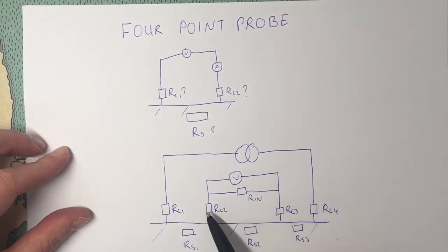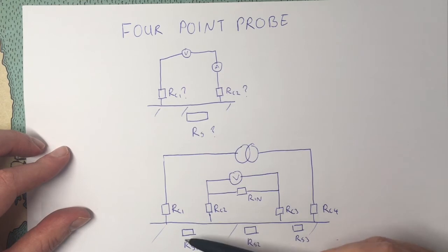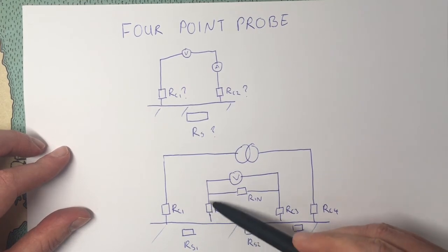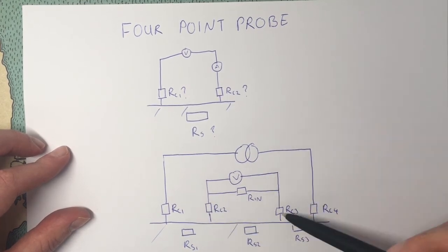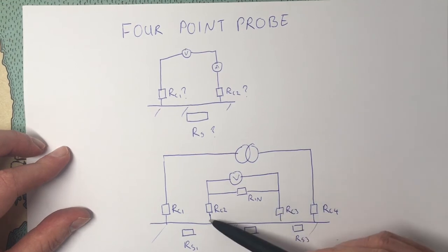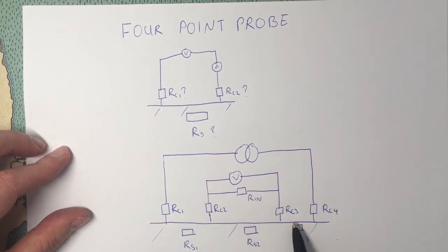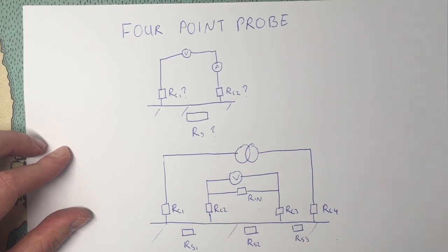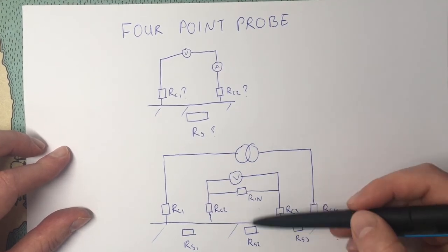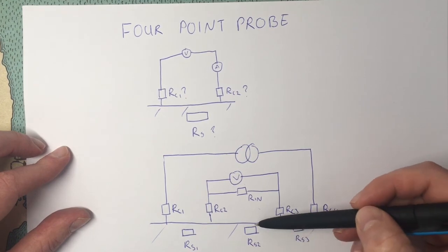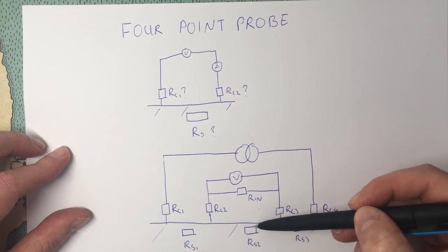It is usually much higher than any of these resistances. So we can effectively say that there is no current flow through these contact resistances, so we don't get any voltage drop over here. The only voltage drop we get is over this resistor because it is much smaller than this one, and there is only current flowing in this direction. So this voltmeter only measures the voltage drop over this sample resistor.